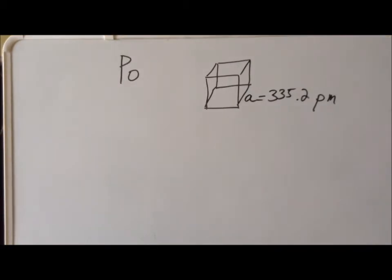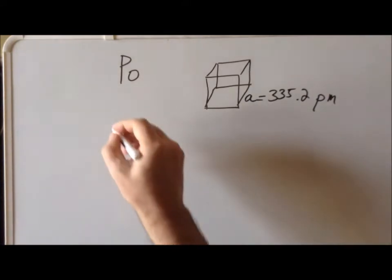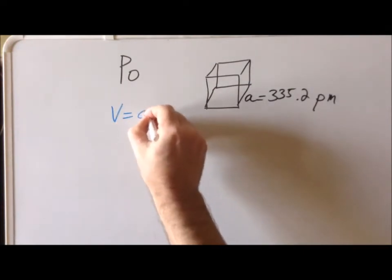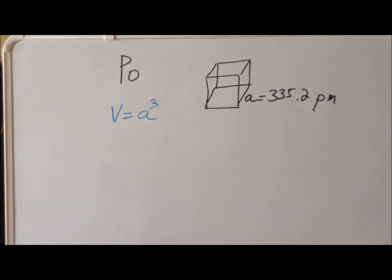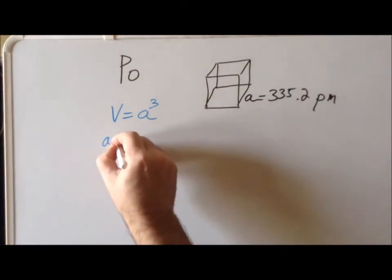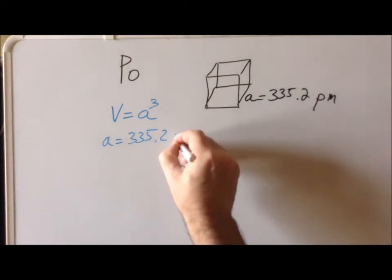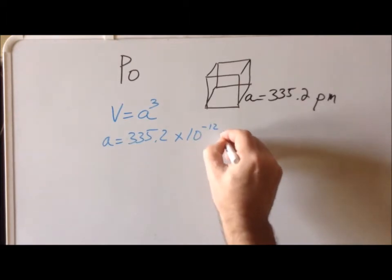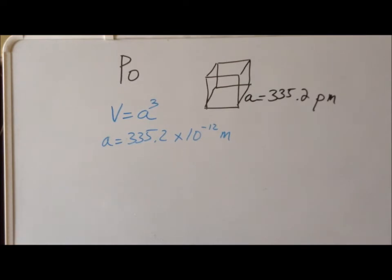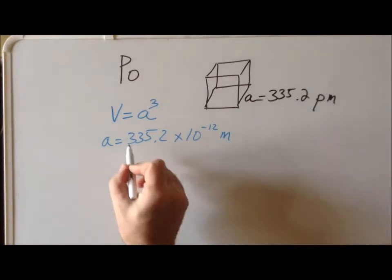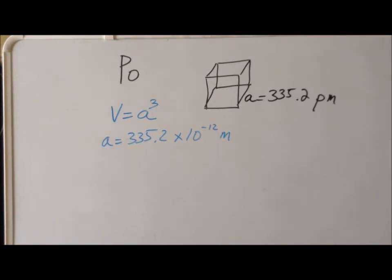Our density calculation will revolve around two separate steps: calculating the mass of the unit cell and calculating the volume of one unit cell. Let's calculate the volume of the unit cell first. We realize from geometry that the volume of a cube is simply the edge length cubed. This particular edge length A has a length of 335.2 picometers. A picometer, by definition, is 10 to the minus 12 meters. The meter turns out to not be a particularly useful unit in this calculation, so we are going to transform it in two steps.